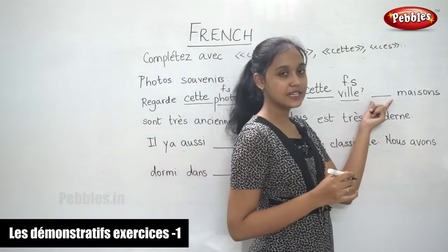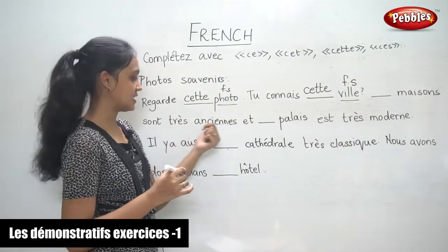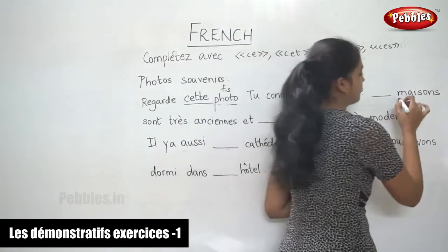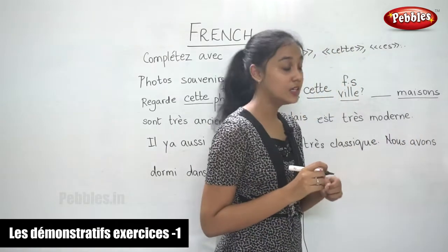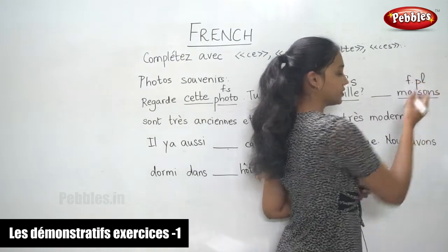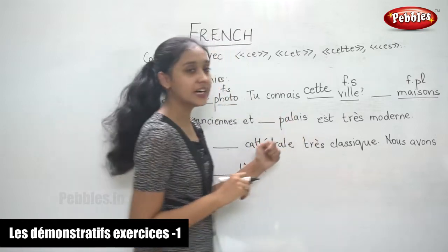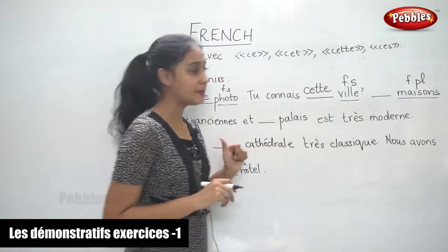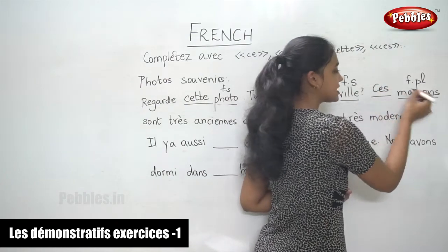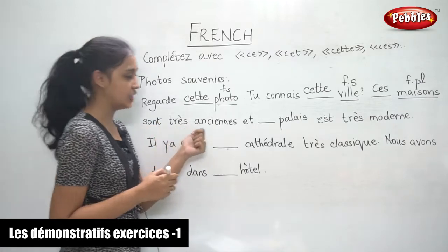The next blank is before maison. Très et siens. Now the noun here after the blank is maison. Maison is feminine plural. So when the noun is in the plural form, regardless of whether it is masculine or feminine, we write ces. Ces maisons sont très anciens.